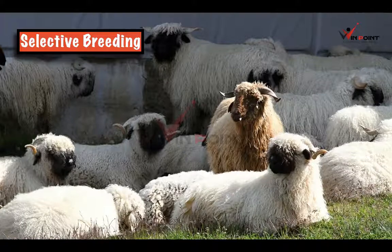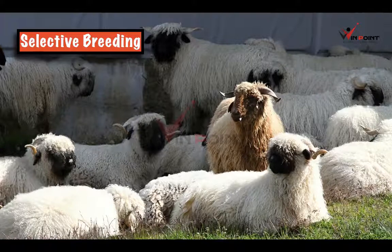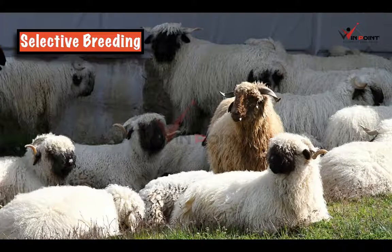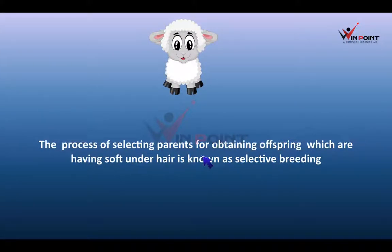For that, we need to select the parents, such that these parents can give offspring which are having soft underhair. This process is known as selective breeding. The process of selecting parents for obtaining offspring which are having soft underhair is known as selective breeding.